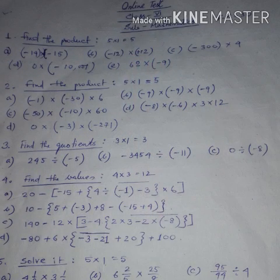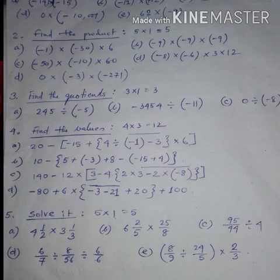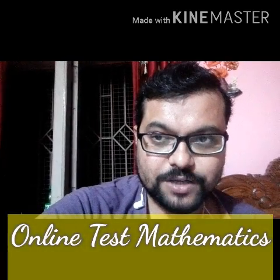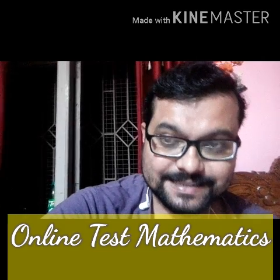Third question: find the quotient — 245 divided by minus 5, then minus 3454 divided by minus 11, then 0 divided by minus 8.